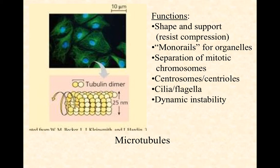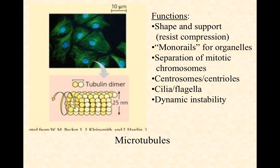Microtubules are the essential form of cytoskeletal fibers for moving chromosomes around during mitosis and meiosis. Centrosomes and centrioles act as organizing centers for the mitotic spindle apparatus. Cilia and flagella are largely made of microtubules and feature dynamic instability, meaning tubulin can polymerize and depolymerize these microtubules very rapidly depending on modifications — usually a phosphorylation/dephosphorylation switch. So microtubules can be built very quickly and then taken apart again very quickly, which is important for certain forms of movement.